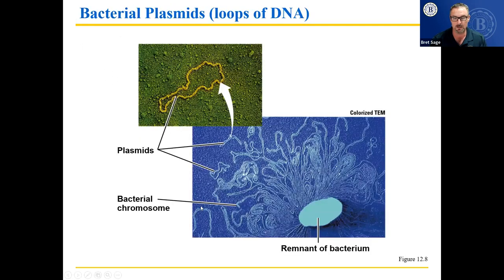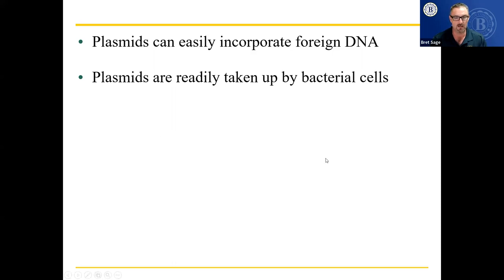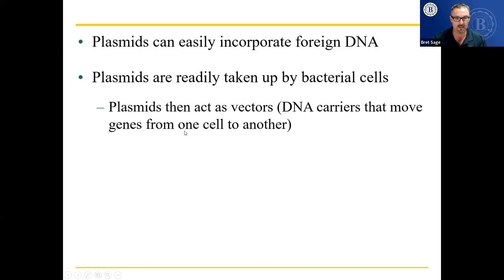If we look at an exploded bacterium, the vast majority of the DNA is the single long bacterial chromosome, but you also see plasmids — the separate pieces of DNA that do very specific jobs. Plasmids easily incorporate foreign DNA; you can break into these plasmids, put in a gene, and the bacterium will suck up that plasmid and make it part of its normal genetic signature. Plasmids act as vectors — a vector is anything that moves something from one place to another. In this case, you're moving a gene into the bacterium.